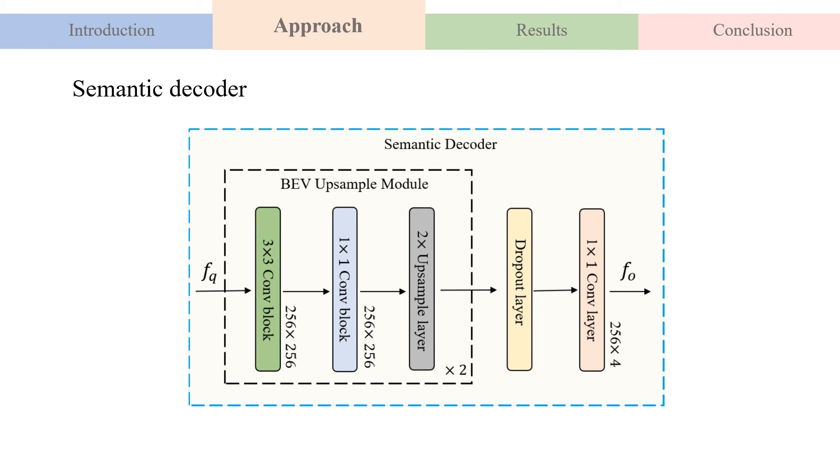In the semantic decoder, we reshape the BEV query features from the transformer decoder into a 2D spatial feature. The 2D spatial feature is then fed to a two-stage BEV upsample module, a dropout layer, and a convolution layer to compute the final BEV segmentation result.